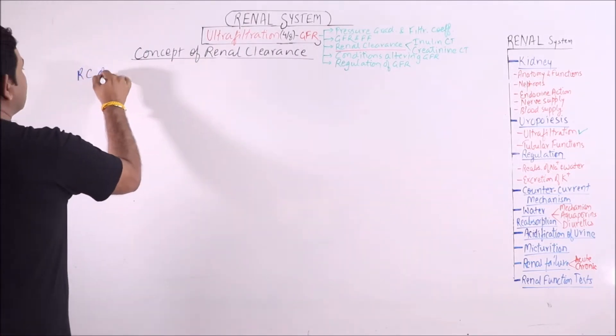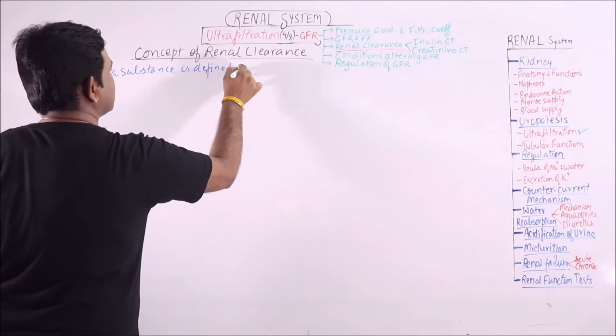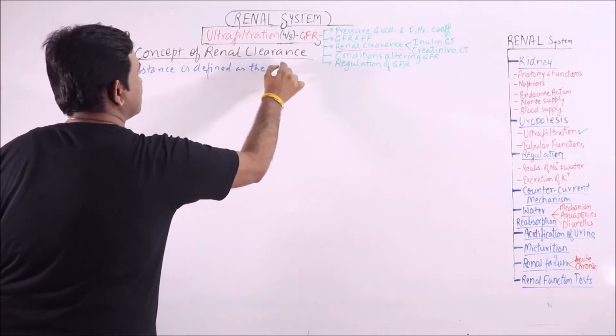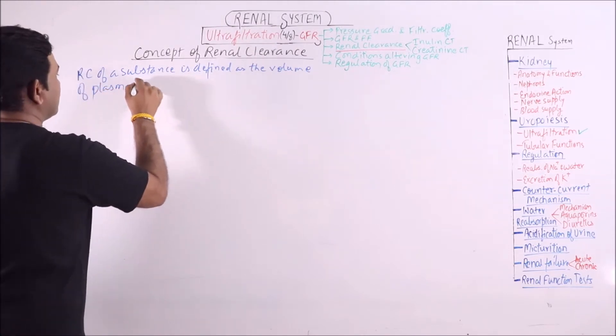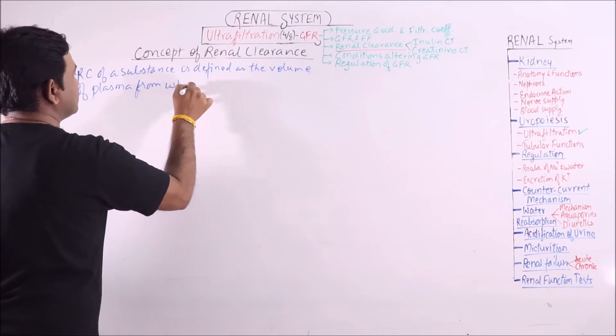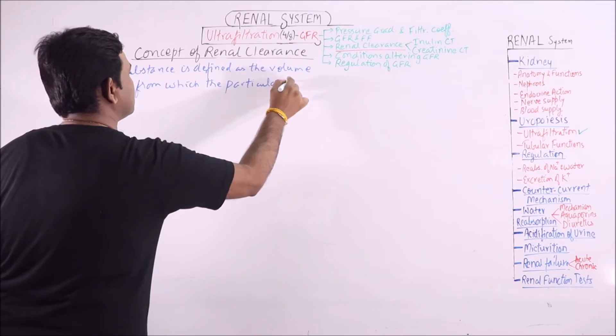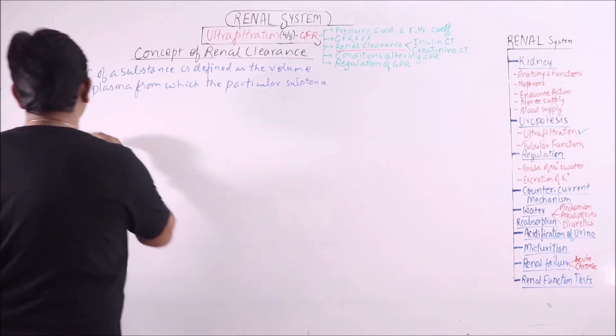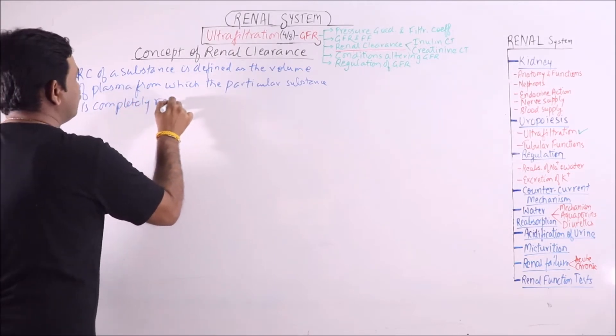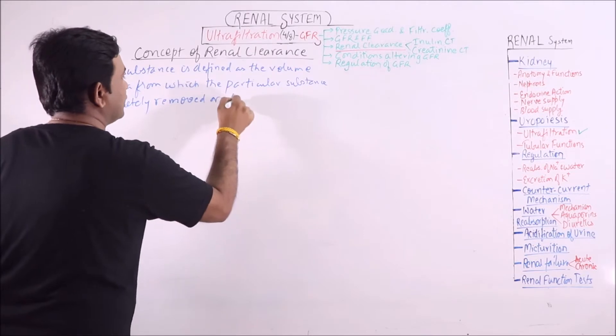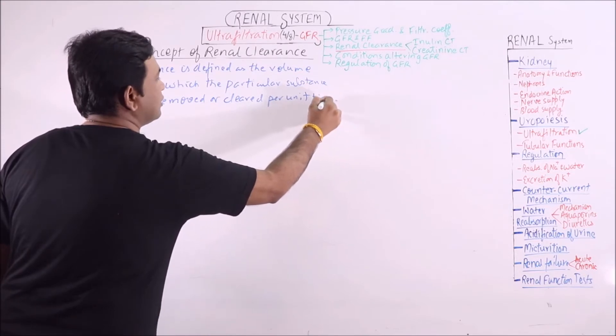Renal clearance of a substance is defined as the volume of plasma from which the particular substance is completely removed or cleared per unit time.